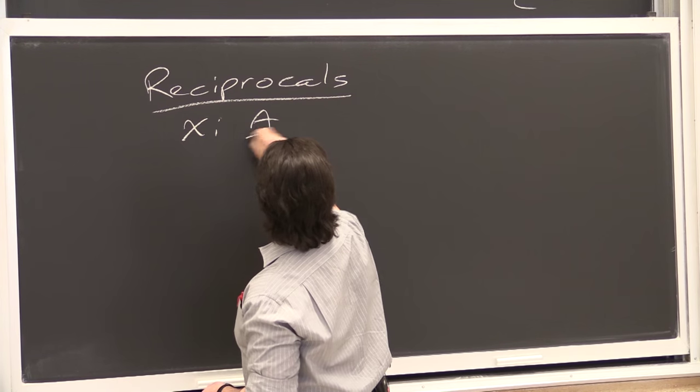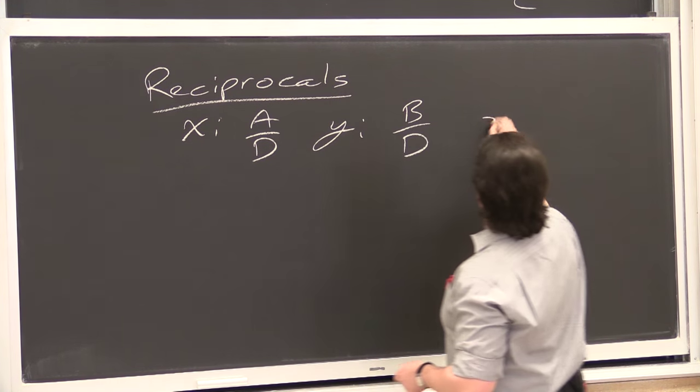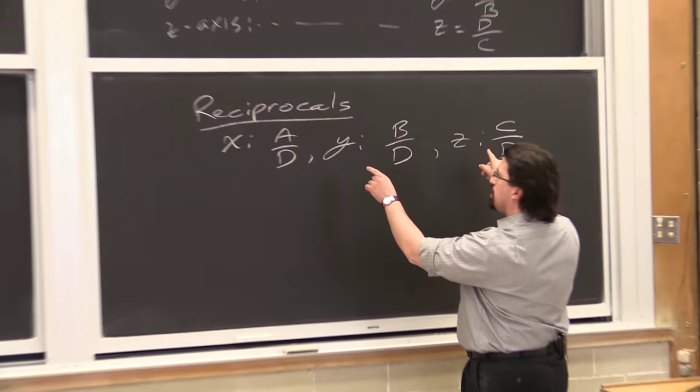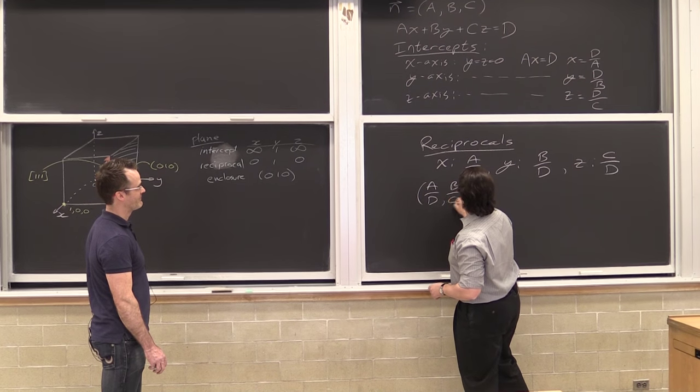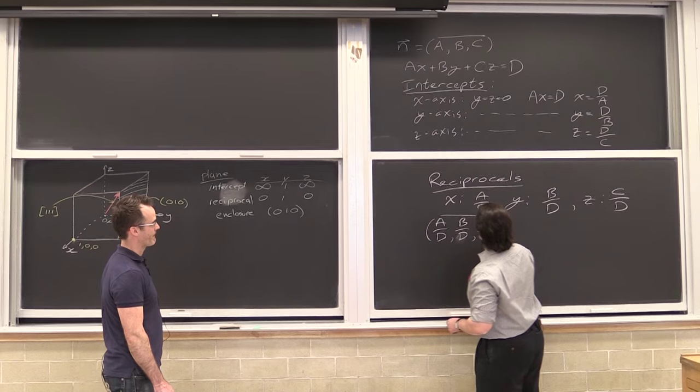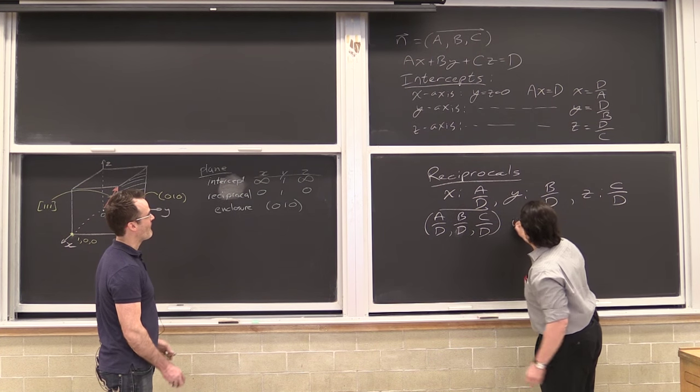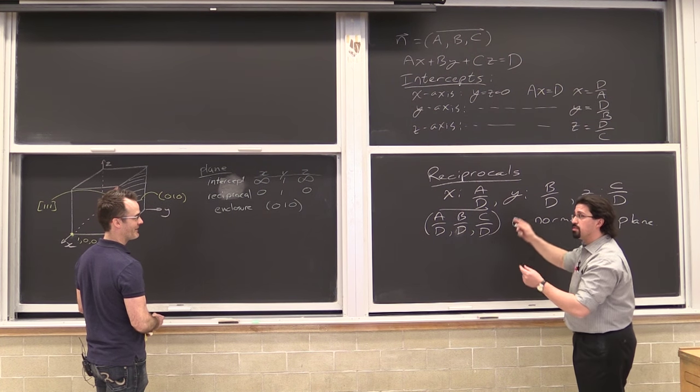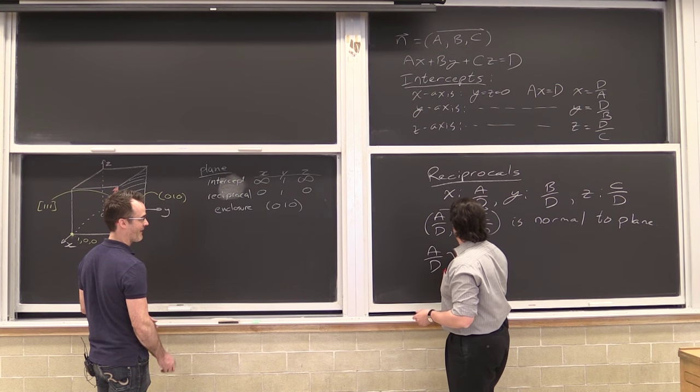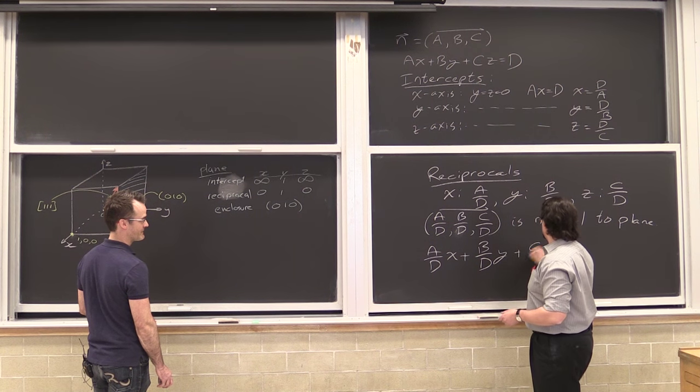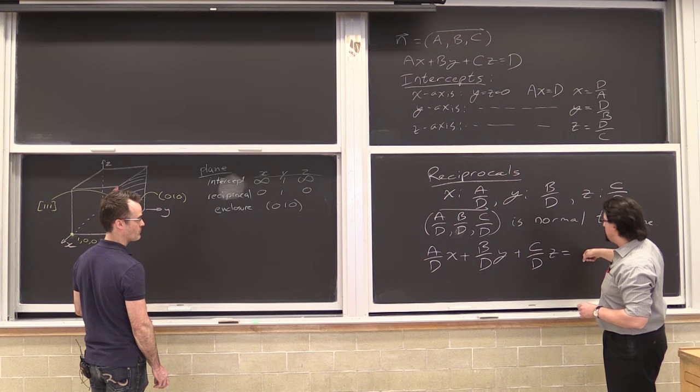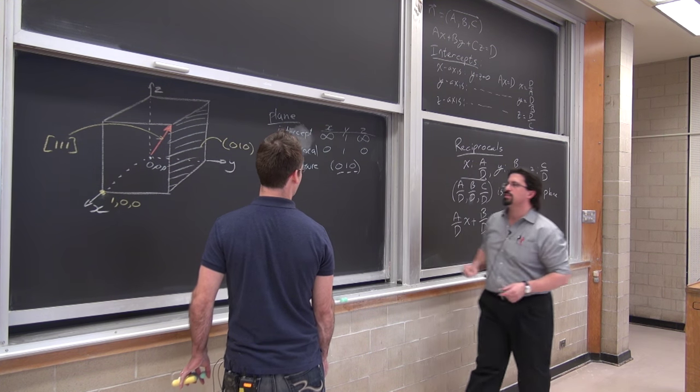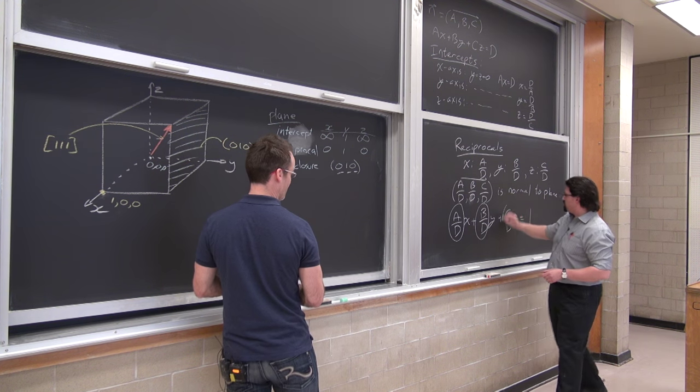So for the x, we would have a over d. For the y, we would have b over d. And for the z, we would have c over d. And look at that. Because if we take this, if we write that as a vector, this is just a constant multiple of our normal vector. So this is normal to the plane. Which means that we can plug these guys into our original. We can rewrite it as a over d times x, b over d times y, c over d times z. But then if we divided everything by d, then we divide the right hand side by d. One. And you get just one, yes.